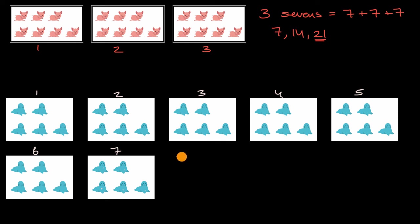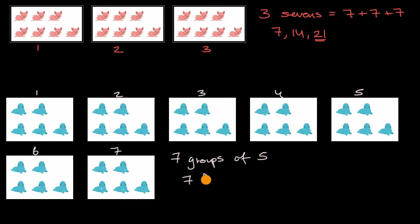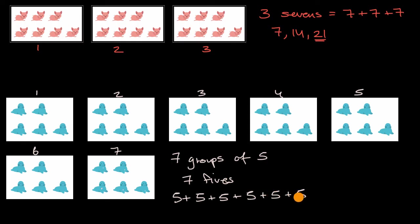So what are we dealing with? We're dealing with seven groups of five. I could write seven groups of five, or I could write seven fives. I could write five plus five plus five plus five plus five plus five plus five — so that is seven fives.